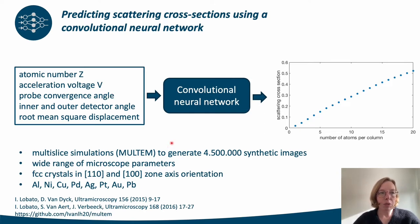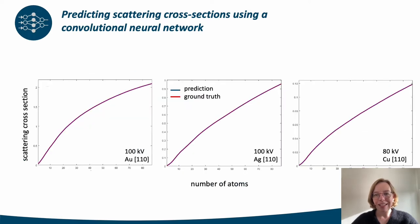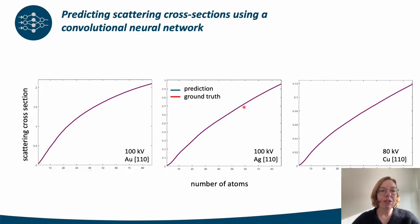For the training, we used frozen phonon multi-slice simulations using the open source MULTEM software. This has been done for a wide range of microscope parameters and for a specific set of FCC crystals so far. In particular, more than four and a half million training images have been used to train this network. Here you see some examples where the curves shown in red represent the ground-truth scattering cross-sections for different crystals and microscope settings — obviously not part of the training data set. The match with the predicted scattering cross-sections shown in blue therefore demonstrates the validity of this neural network.